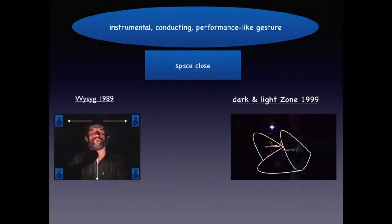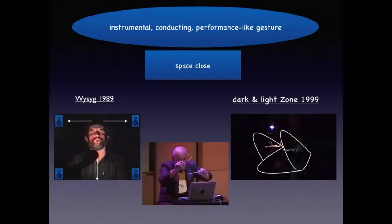The next example is Darkened Light Zone from 1999, composed as a commission for the RTT Quartet. I built up a special light installation based on four light sensors where I control four virtual instruments by the movement of one or two hands, with structures controlled live. I think about it as a 3D sound sculpture around the light and around four sensors.